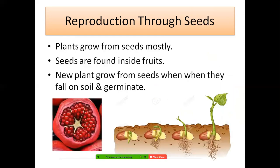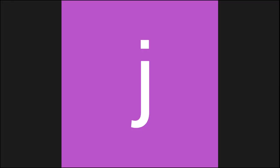Plants also grow from seeds. Seeds are mostly found inside fruits. There is one fruit which has its seed on the outside — that is homework for you to find out! New plants grow from seeds when they fall on soil and germinate. In the next video we will study about the structure of a seed and the process of germination. Thank you, children.